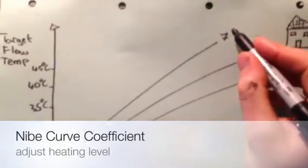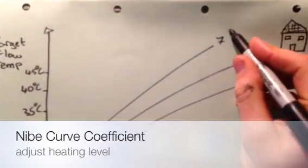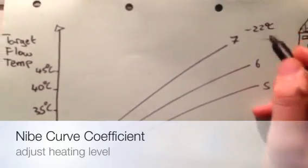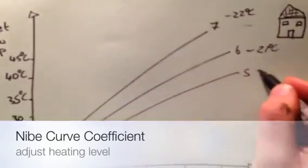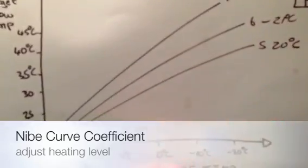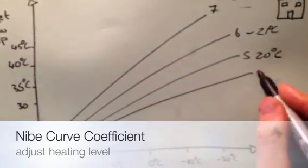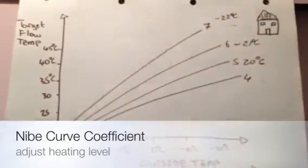The higher the curve, at heating curve 7 you might have maybe 22 degrees, 23 degrees inside your building. These are just examples. 21 degrees, 20 degrees inside your building. If it's heating curve 4 or less, you're going to have less heat.